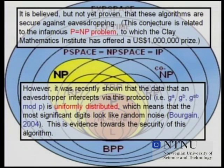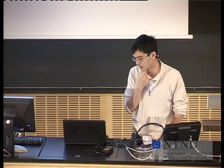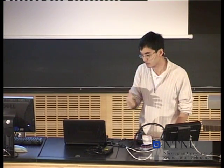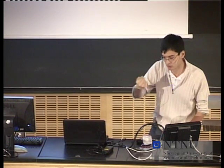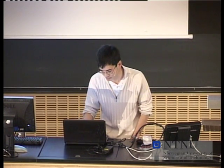It was shown that the data received by this protocol is what's called uniformly distributed. What that means is that if you look at the most significant bits of this data, they're distributed just like random noise, and there's no way you can reconstruct information from random noise — any algorithm applied to random noise just gives more random noise. So if you only see the most significant bits of this data, you cannot reconstruct anything about the original data. That's not a complete proof of security because the least significant bits could still be used to reconstruct G, but it's evidence towards the information security of this algorithm, and that was proven quite recently.